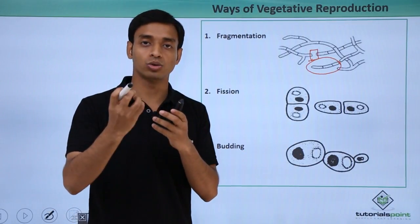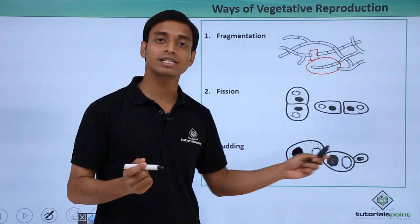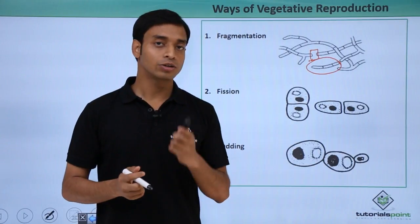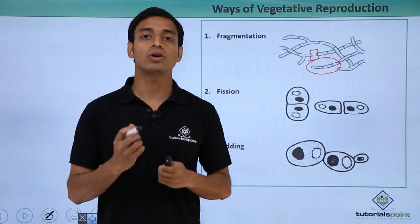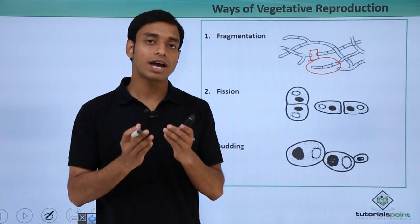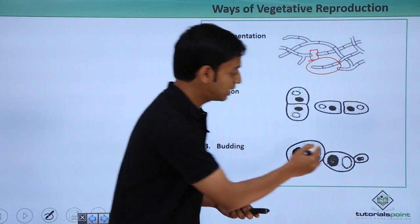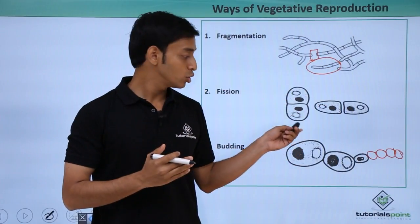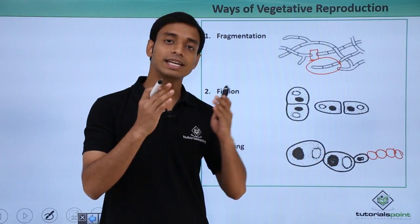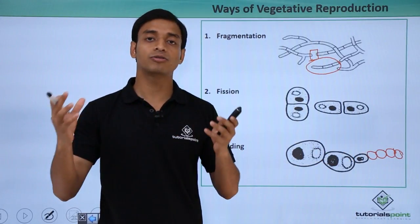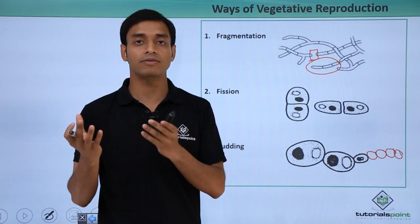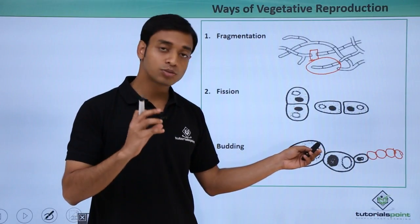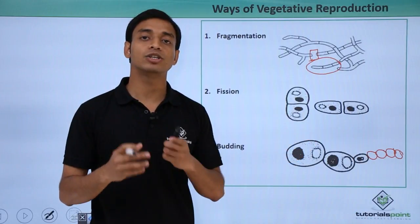The third type is budding. The parent structure shows a smaller outgrowth known as a bud. When it matures and grows older, it separates from the parent body and gives rise to a new organism. At times, some fungi form buds that keep growing without separation, forming a chain of buds known as pseudo mycelium. These can separate when enough buds have grown and the weight becomes heavy, giving rise to new organisms.